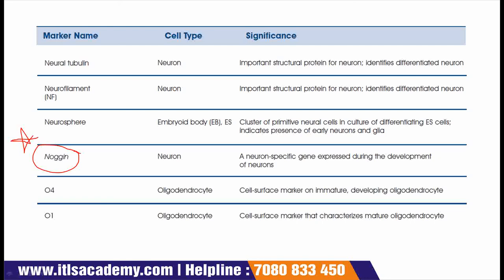The next marker is Noggin, and this is a very important marker. Noggin and upcoming markers like OCT4 and many more are very important — remember all those markers. Noggin is present on neurons and its significance is that it is a neuron-specific gene expressed during the development of neurons. Noggin is responsible for the development of neurons, and it is a very important term.